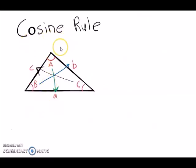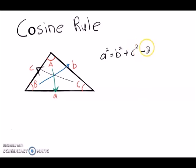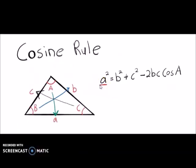Now we come to the cosine rule. The formula is: a² = b² + c² − 2bc·cos A. To remember this, note that 'a' the length and 'A' the angle form a pair, just like in the sine rule.